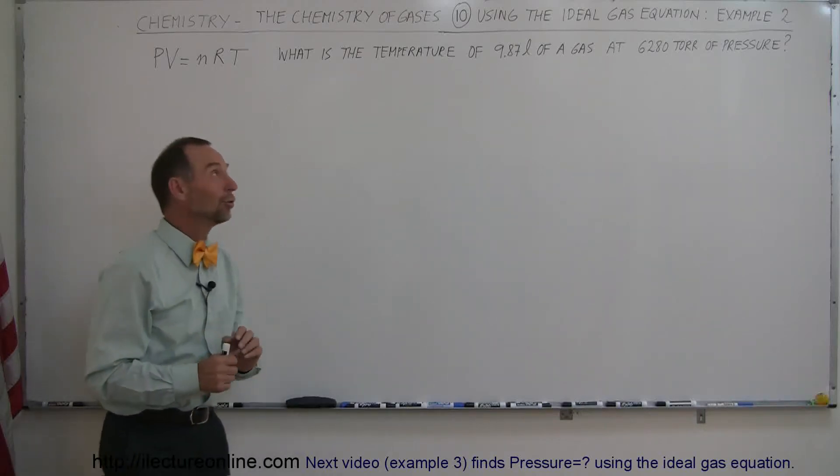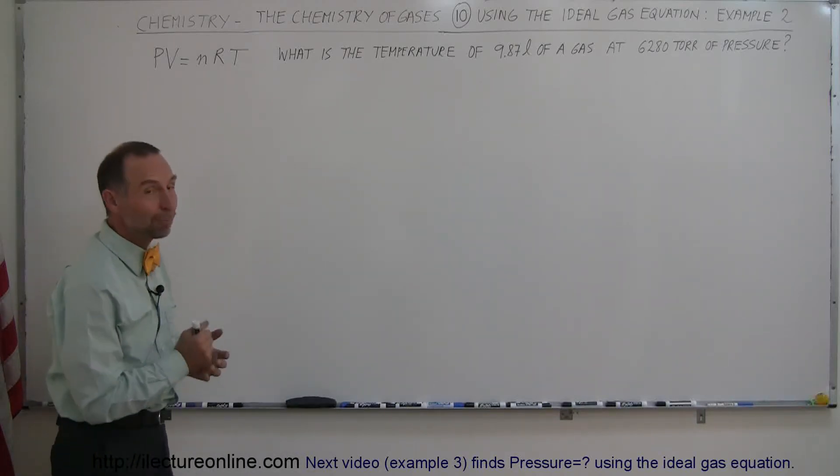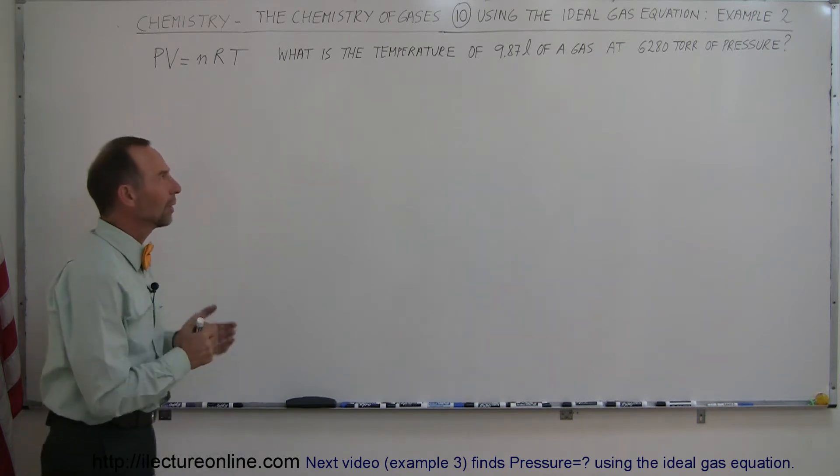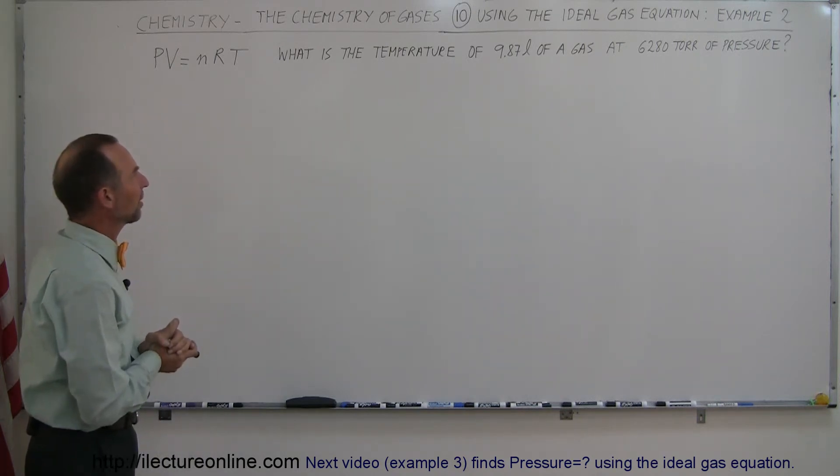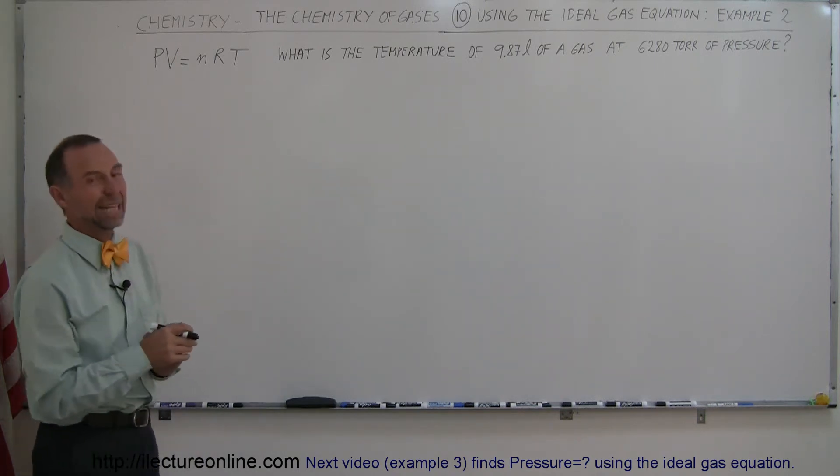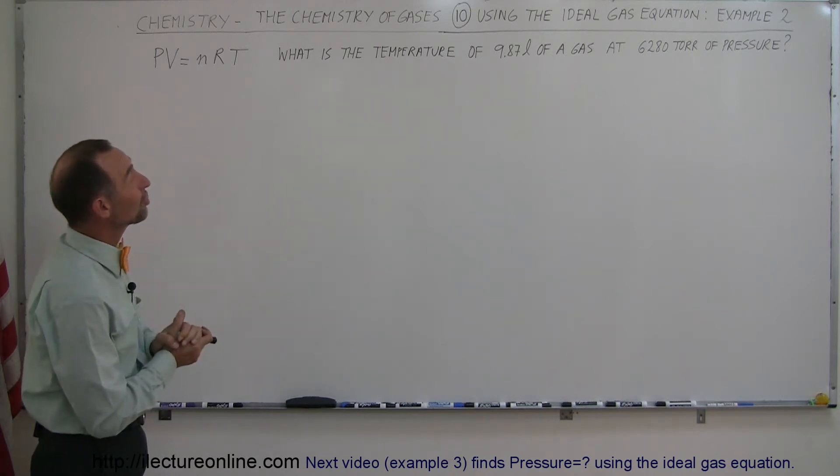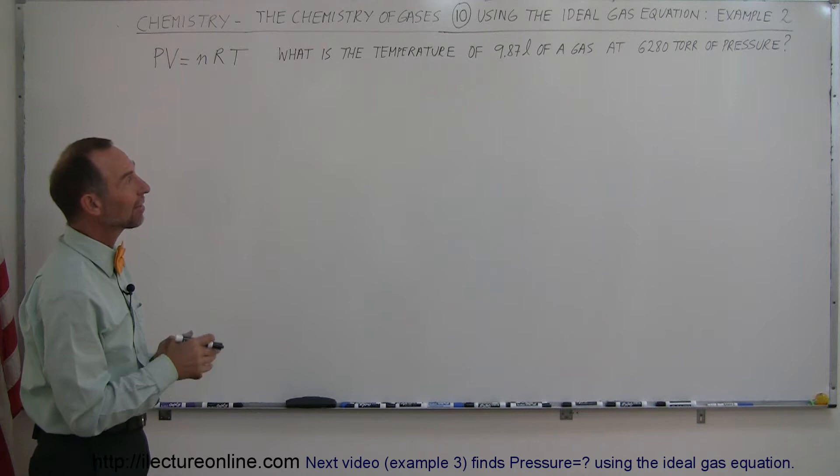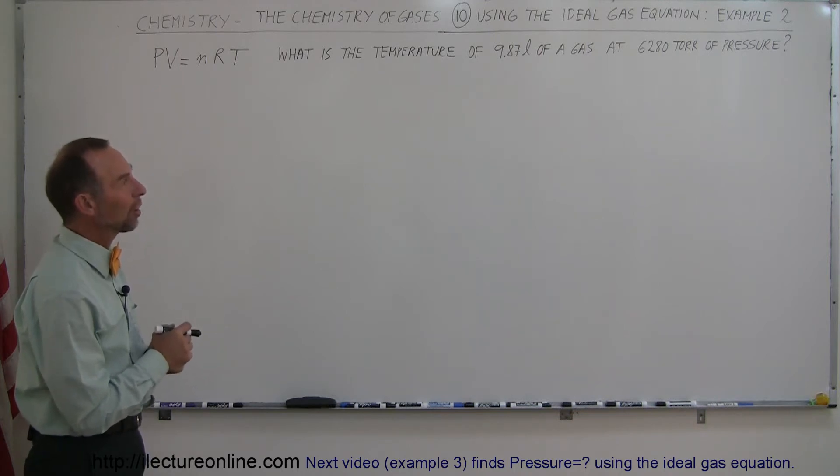In our next example of how to use the ideal gas equation PV equals NRT, we came up with this example here. It asks, what is the temperature of 9.87 liters of a gas that is at 6,280 Torr of pressure?